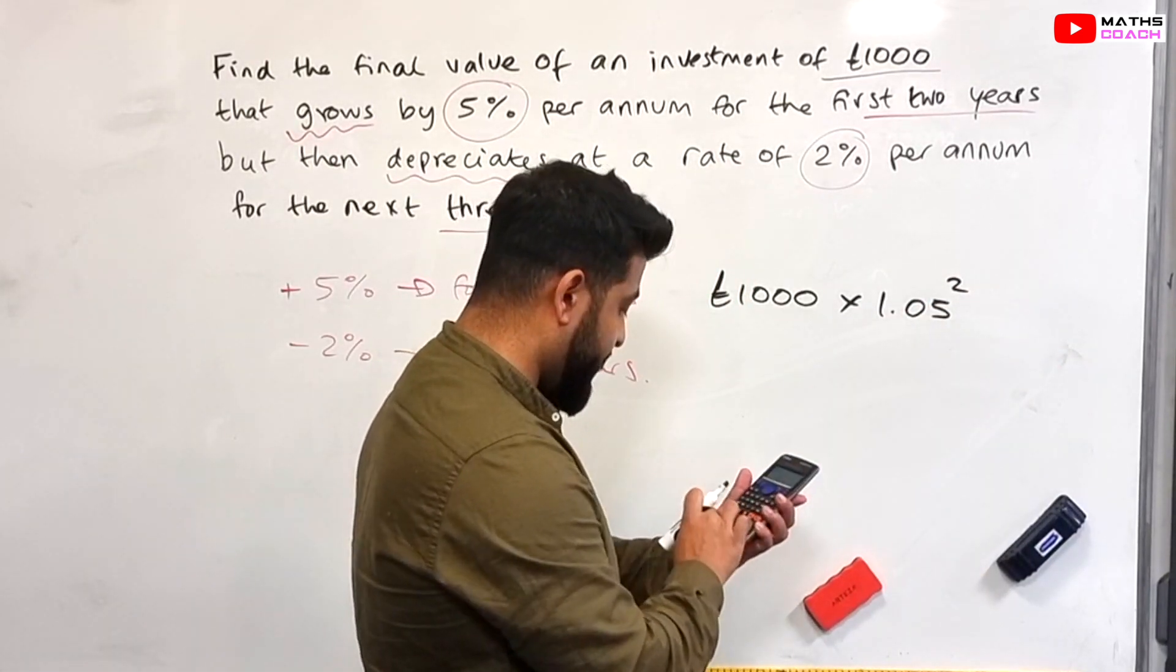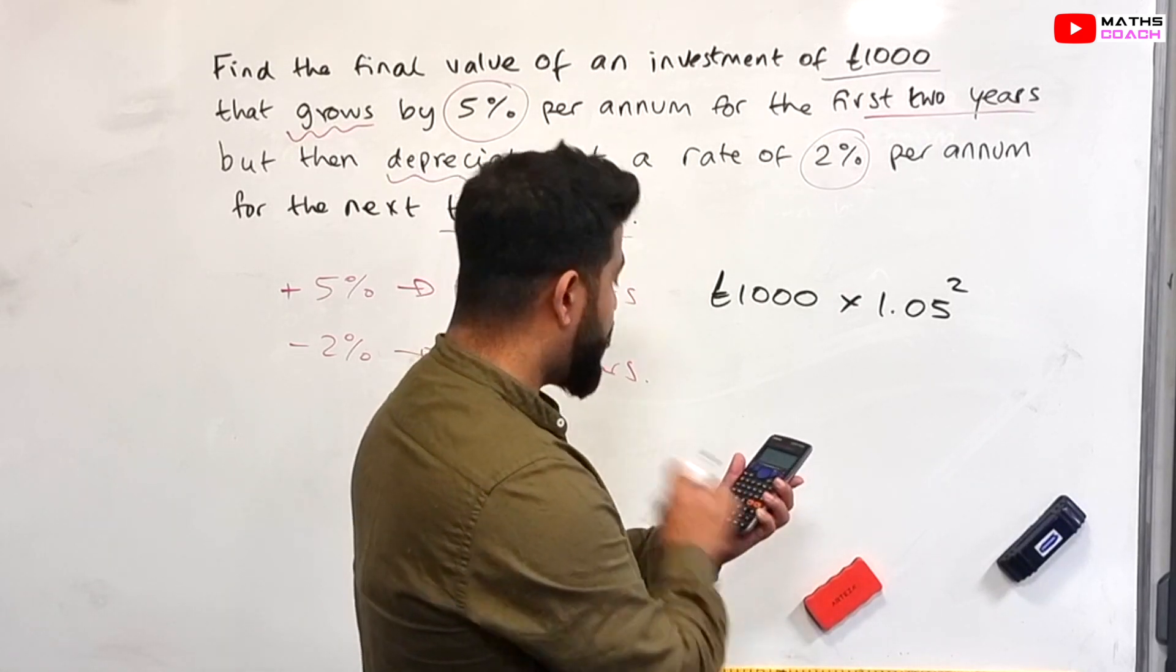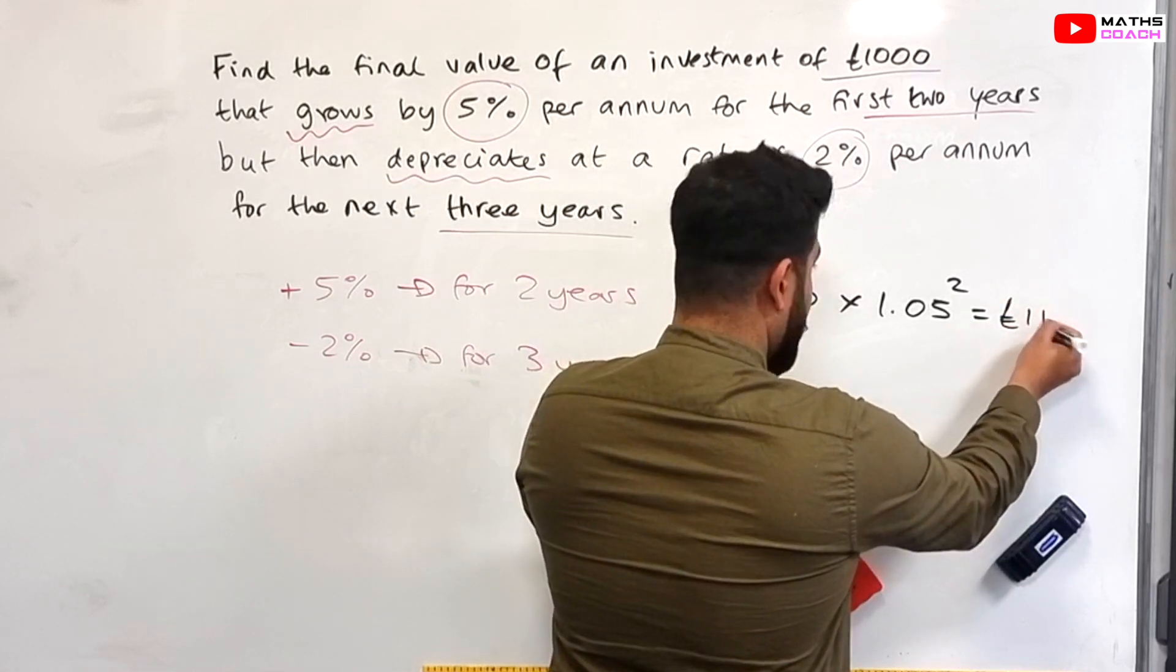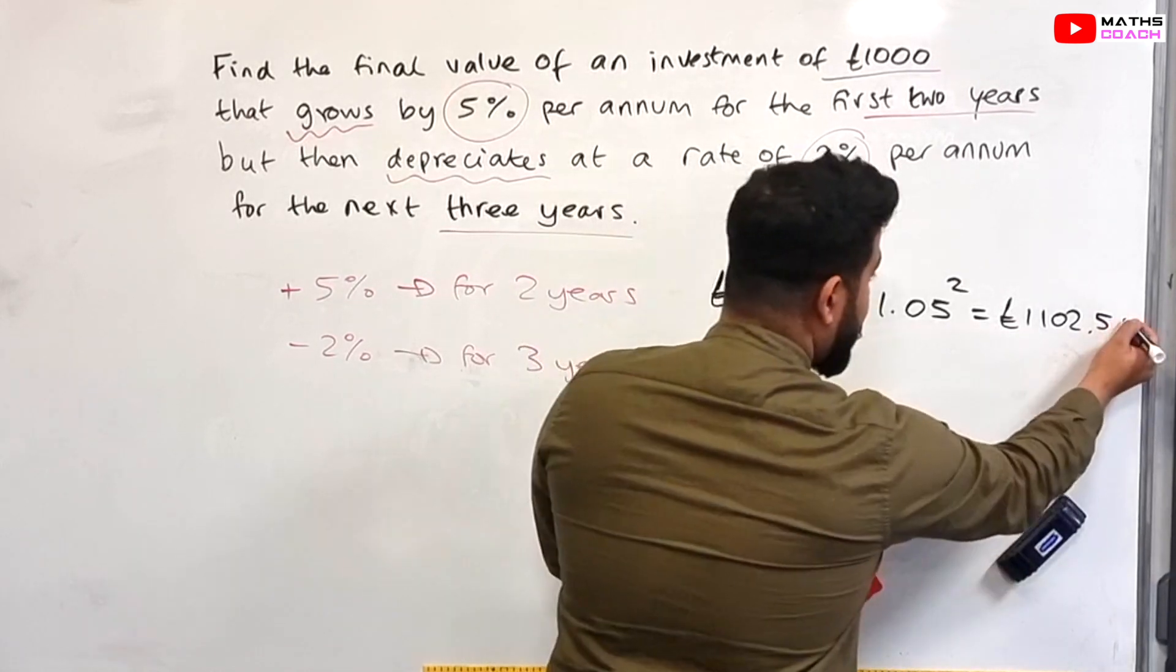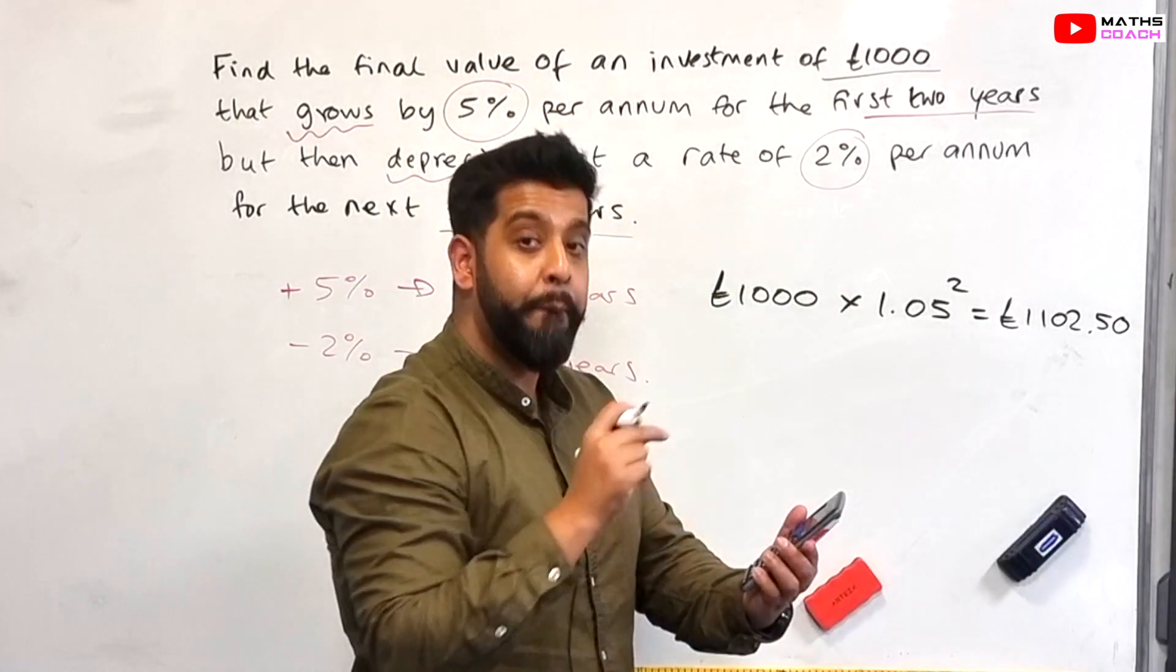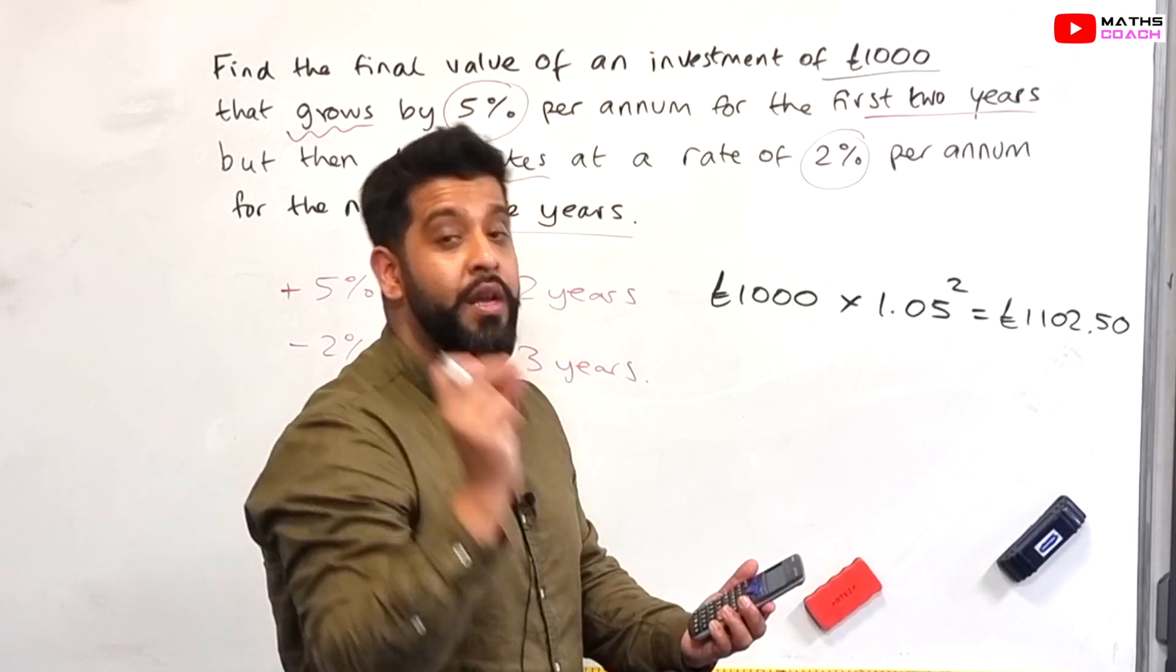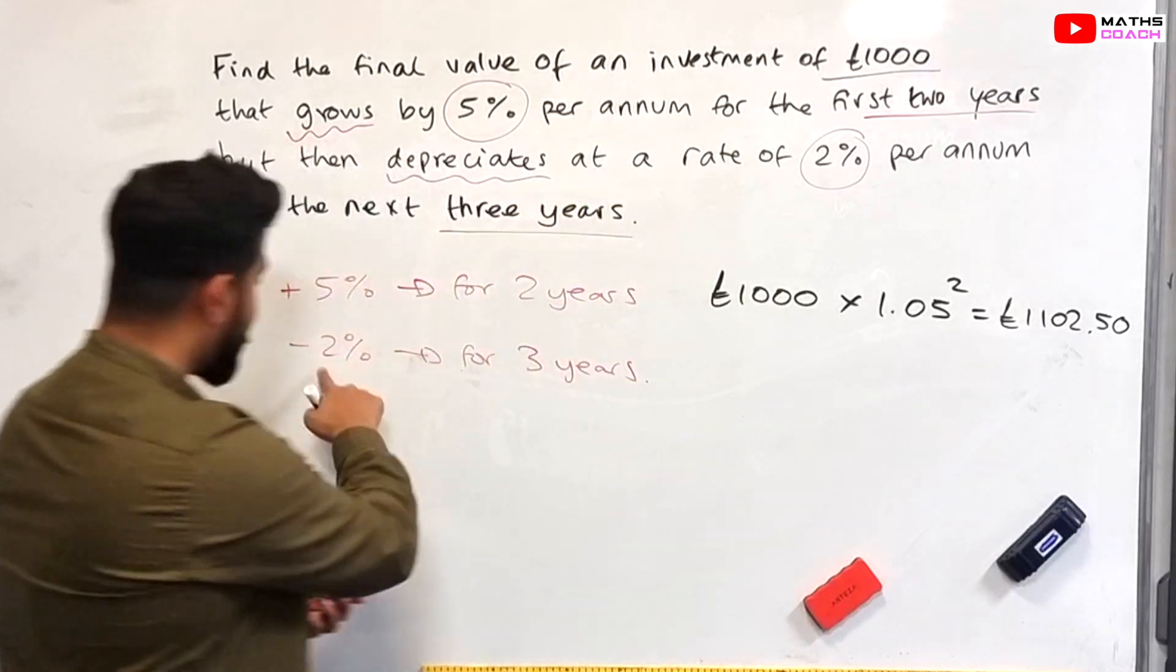So if we put this into our calculator, 1,000 times by 1.05 to the power of two, that gives us £1,102.50. Now notice on your calculator you probably got 1,102.5. You can't write 0.5, you should write two decimal places. So remember to do that by adding that zero there.